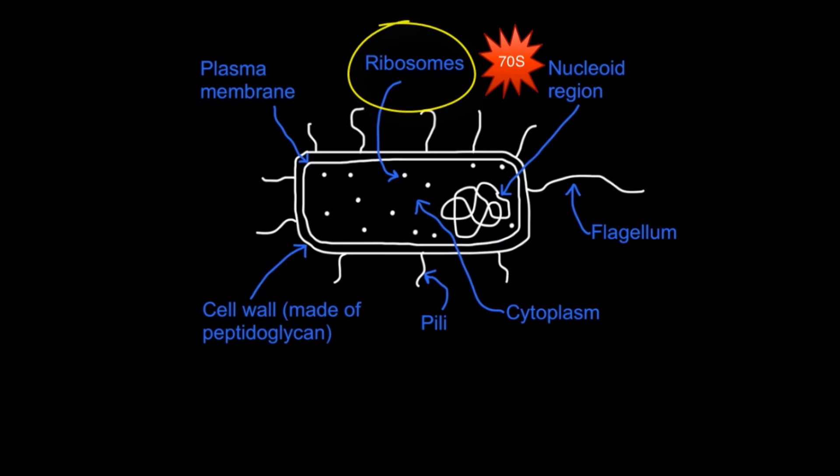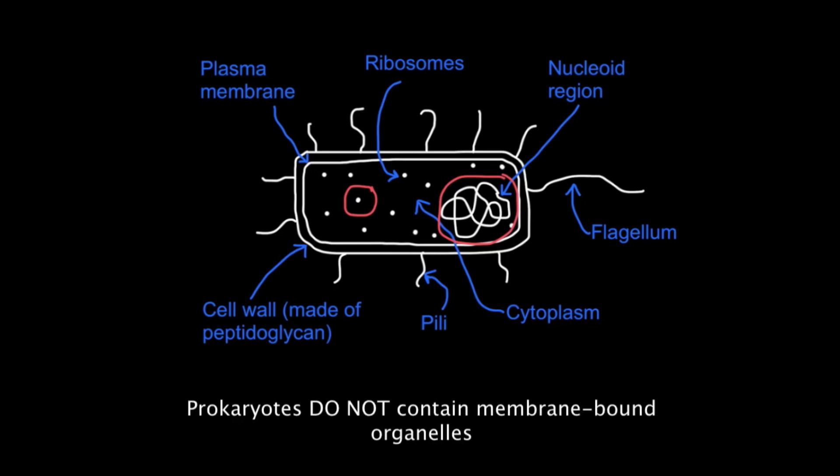So with regards to compartmentalization, prokaryotes are different from eukaryotes because none of the organelles such as the ribosomes and the nucleoid region which are found within the cytoplasm are contained within a membrane. In other words, prokaryotes do not contain membrane-bound organelles.